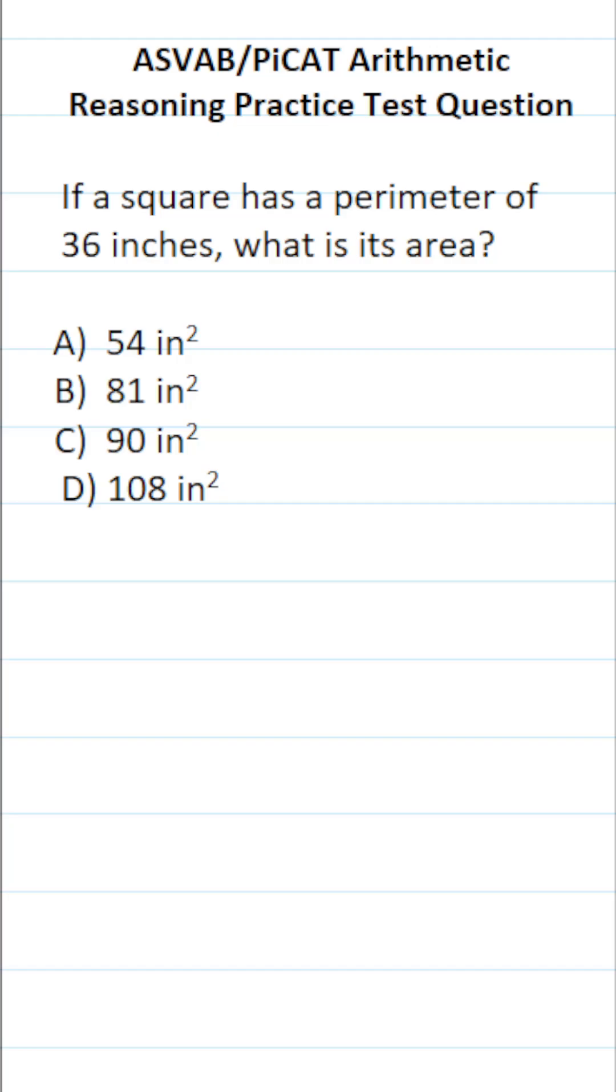So in order to do really well on the ASVAB, you have to know a lot of basic formulas from geometry, including how to find the perimeter and area of a square. Again, you're not permitted to use a reference sheet on this test, so you have to commit these formulas to memory.